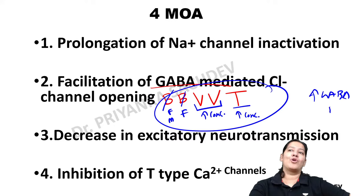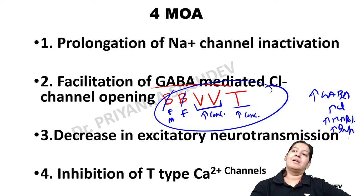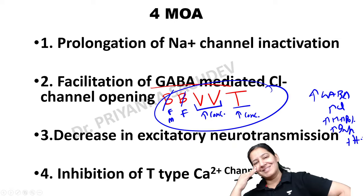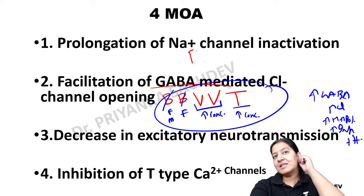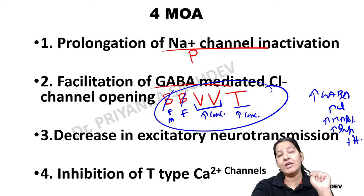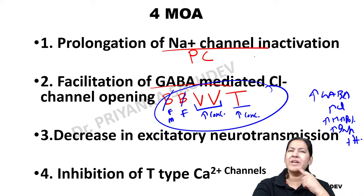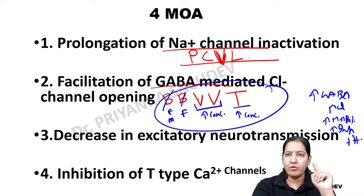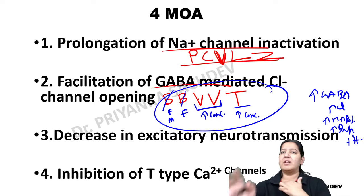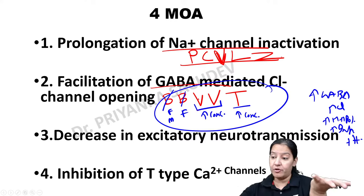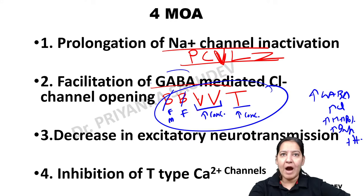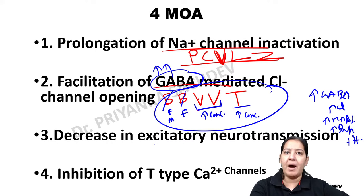All these drugs increase GABA → more chloride → more hyperpolarization → more inhibition → treatment of seizures. Note valproate appears in both the sodium channel and the GABA category. You need to learn which drugs fall under which category — make mnemonics to help. Coming next: the third mechanism — instead of increasing GABA, we decrease glutamate, the excitatory neurotransmitter.